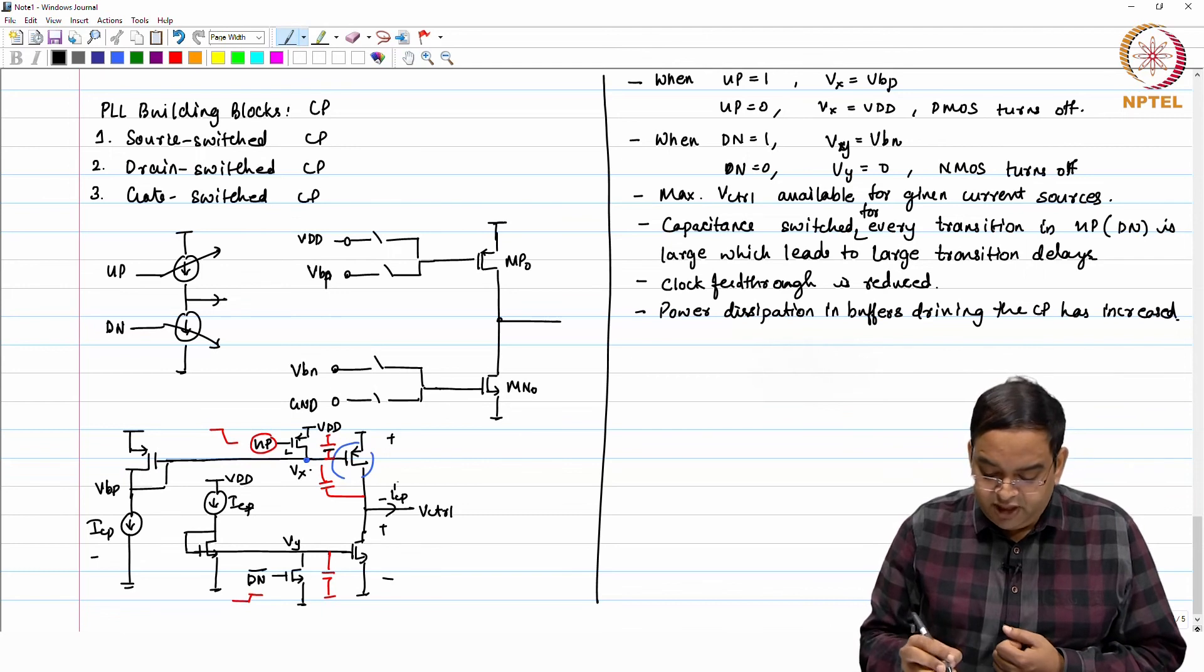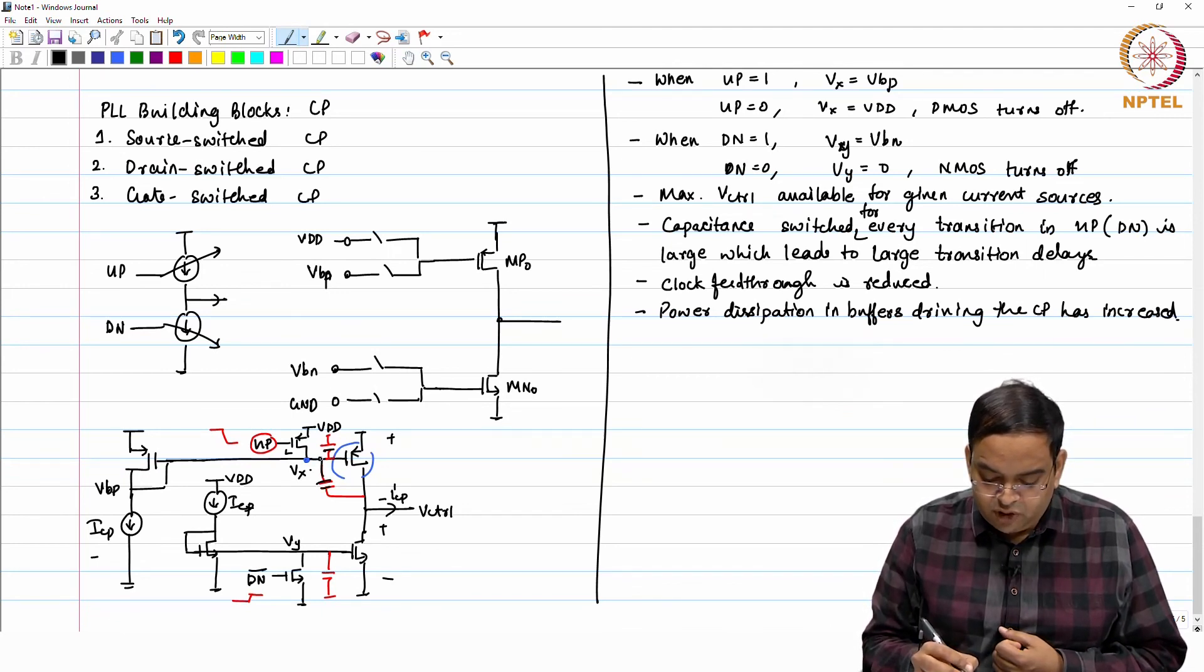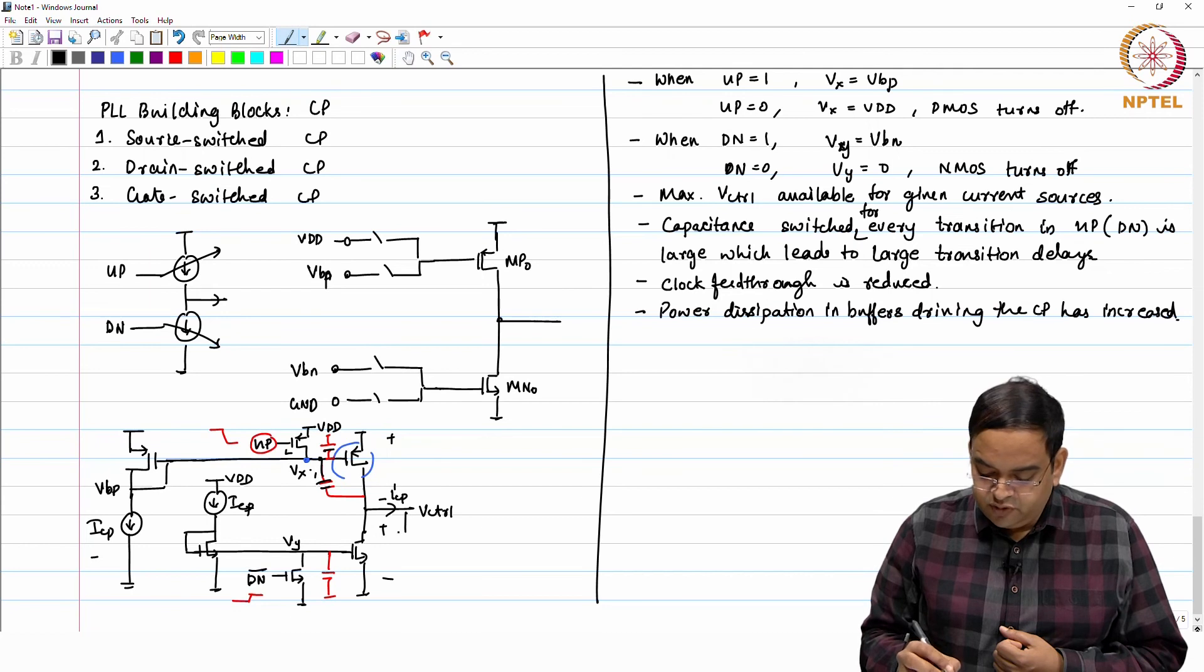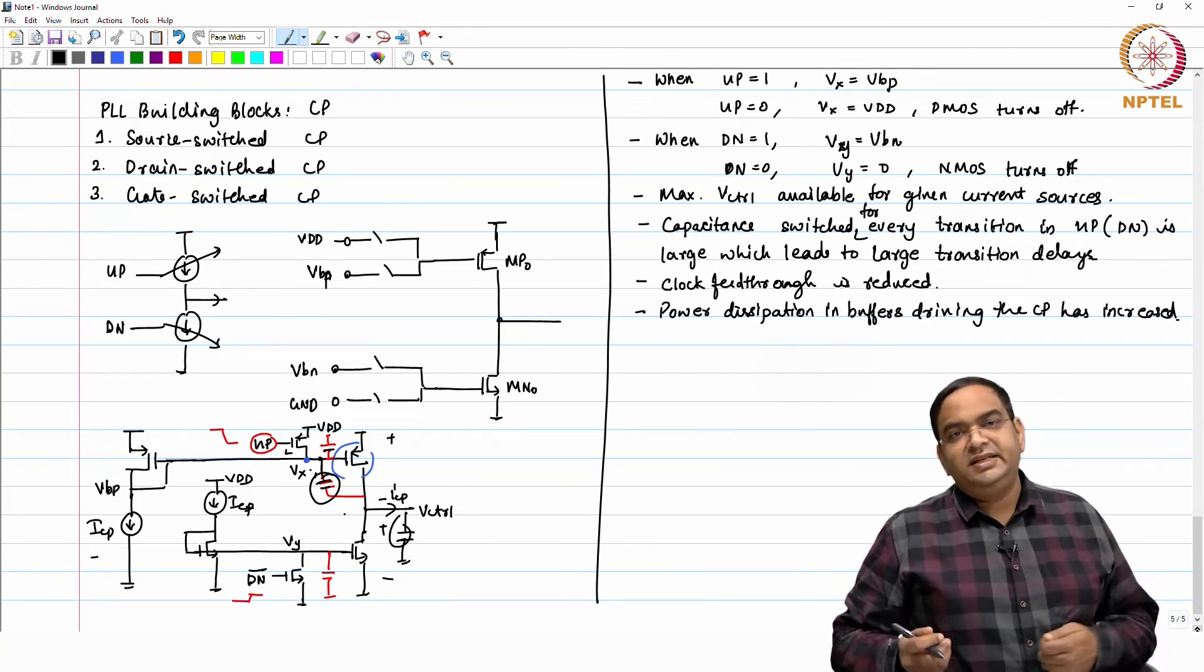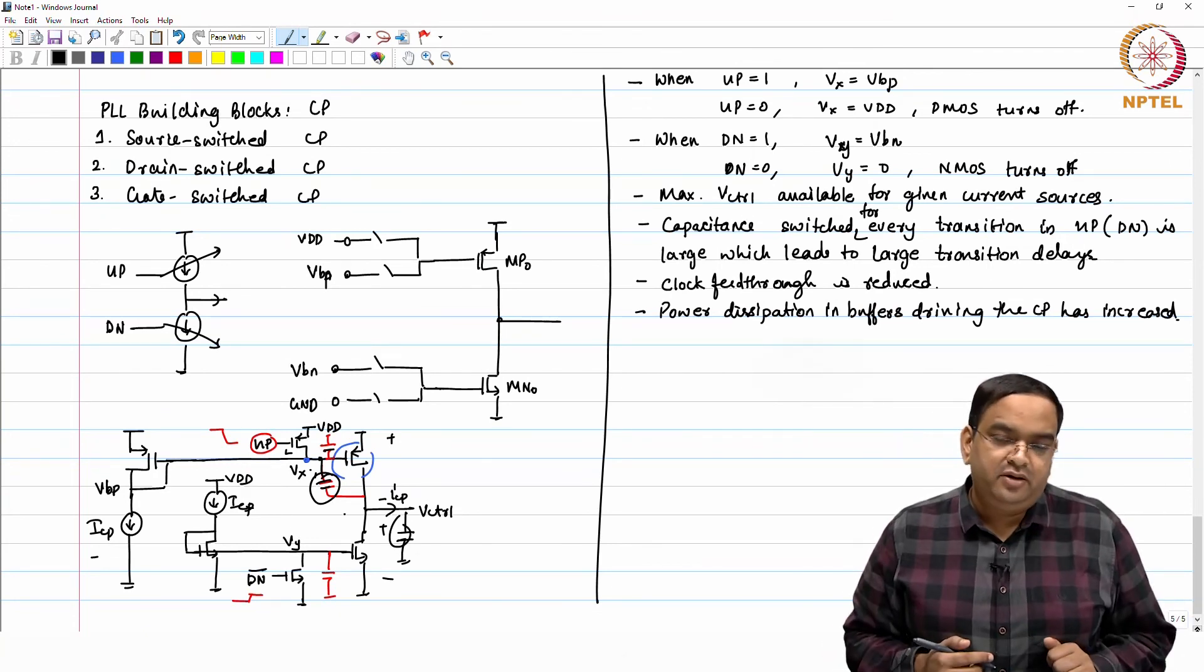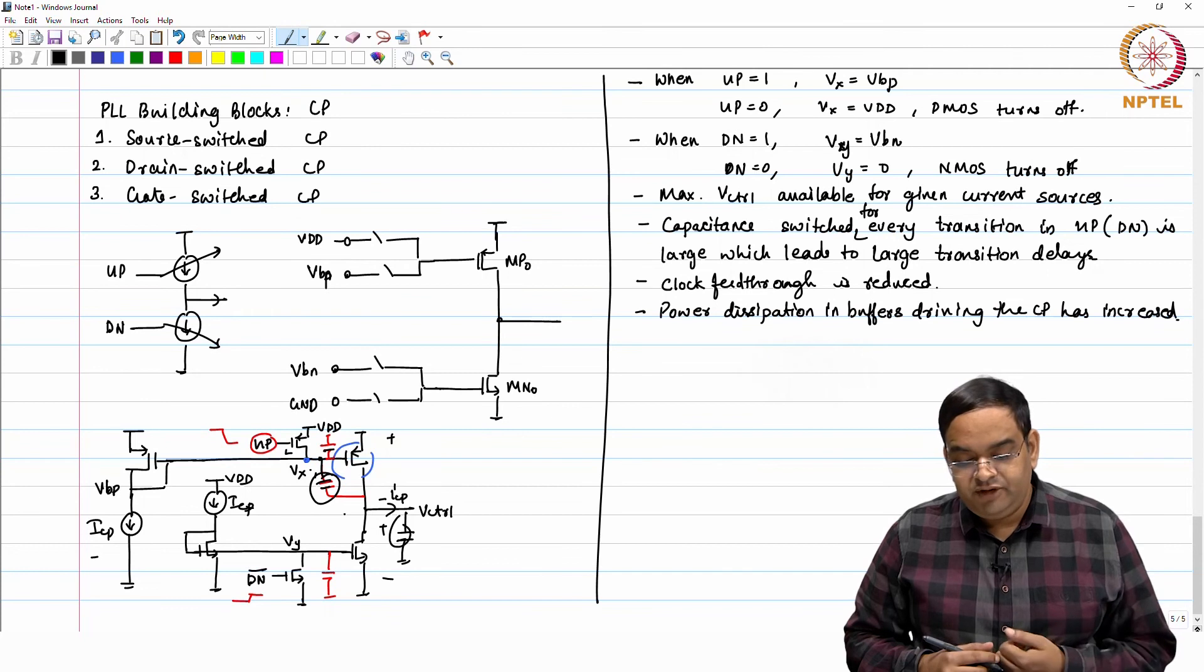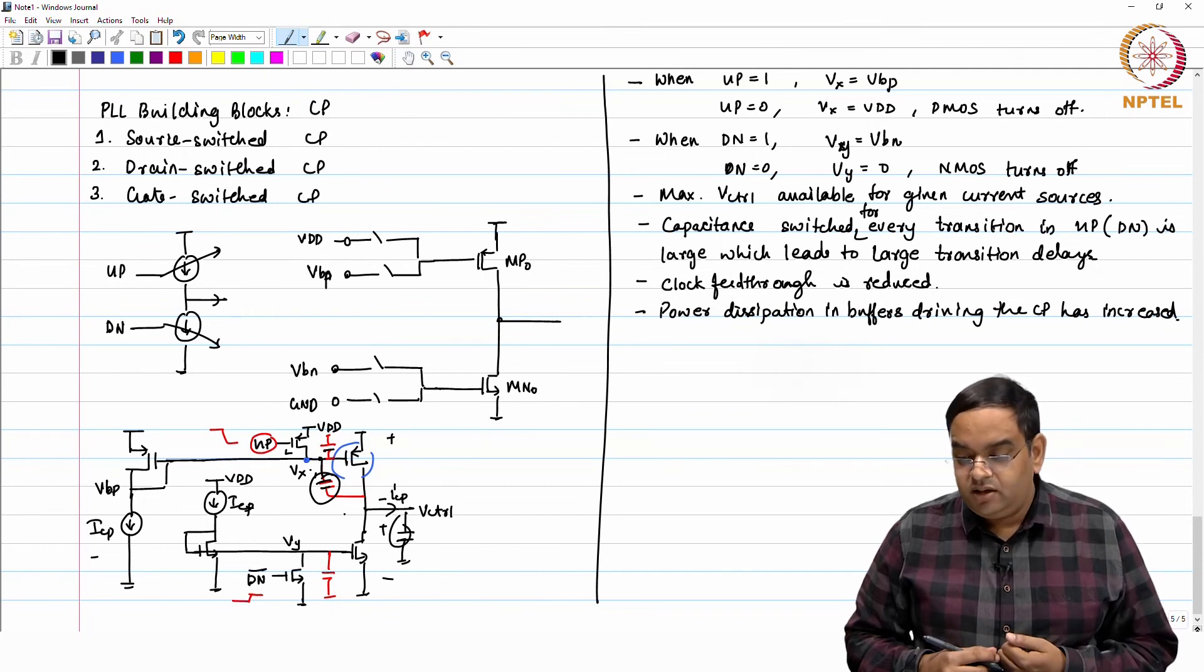Charge sharing happens whenever you make a transition between 2 nodes or whenever you have a transition between 2 voltages on the same node then because of the capacitors connected at that node you will see the charge sharing. That thing happens there, it happens in all these cases. It will happen here also that when this potential goes from VDD to VBP, you will share the charge with the capacitor at the loop filter. You have this capacitor, one of the node potential changes, you will see the charge sharing. That exists in all these cases.